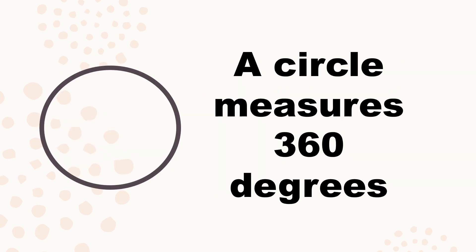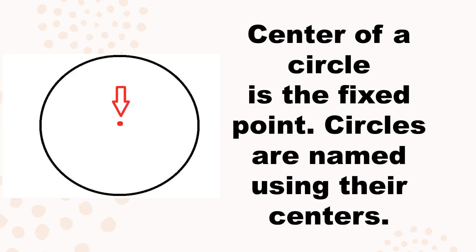A circle measures 360 degrees. The center of a circle is the fixed point. Circles are named using their centers. So if a circle is written with letter A at its center, we call it circle A. If there's another letter indicated in the center of the circle, let's say letter B, then this is named circle B.